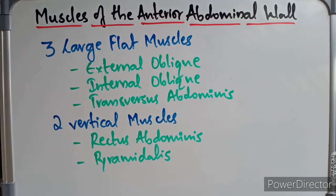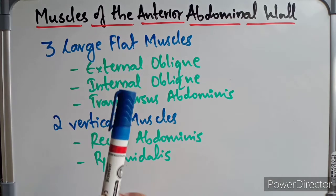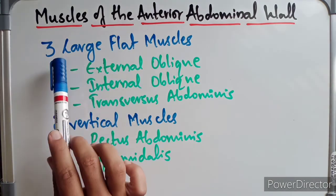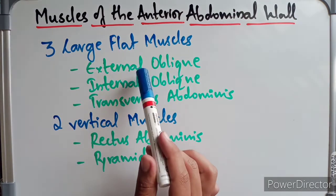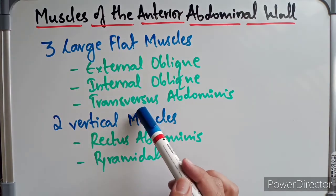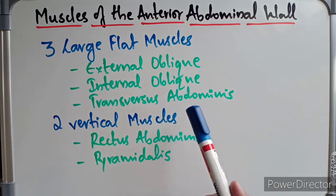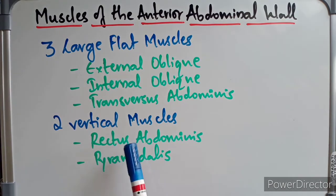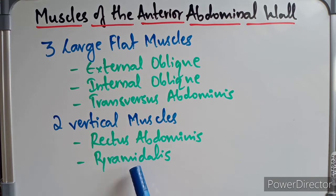Welcome to med time. In this video we are going to look at the muscles of the anterior abdominal wall. The anterior abdominal wall consists of five pairs of muscles, five on either side of the midline. The first group is the three large flat muscles: external oblique, internal oblique, and transversus abdominis. Then we have two vertical muscles: rectus abdominis and pyramidalis muscle.